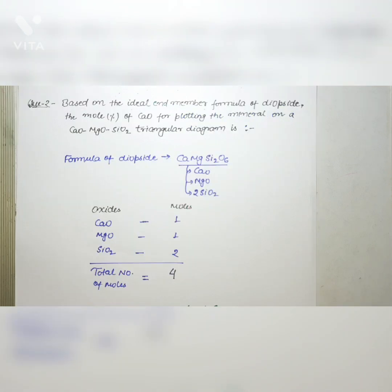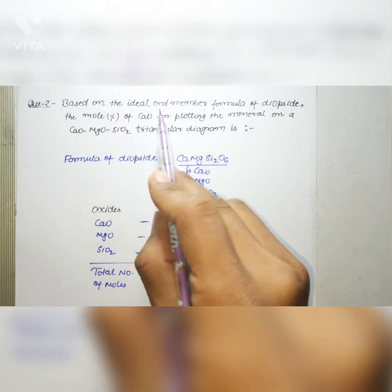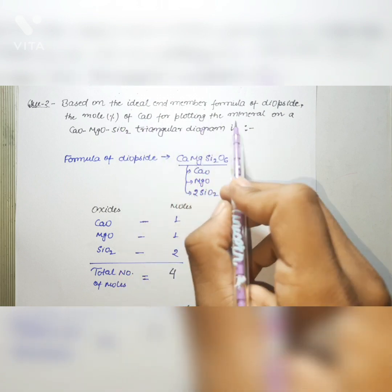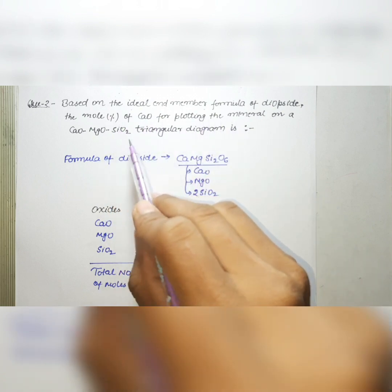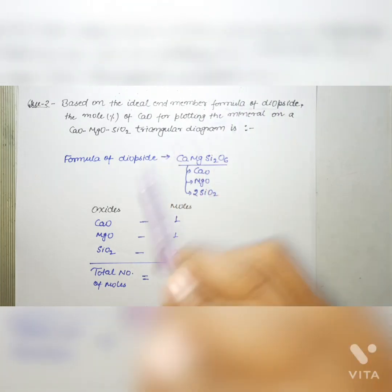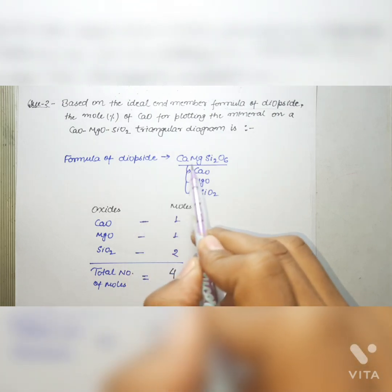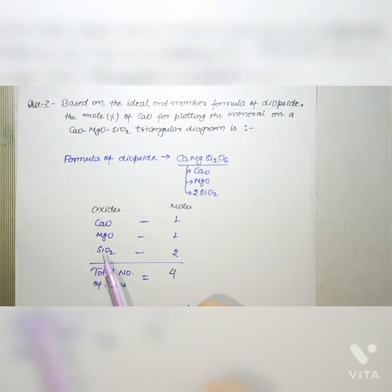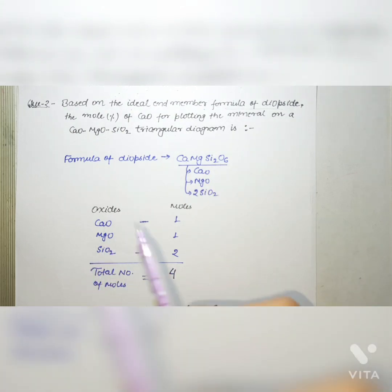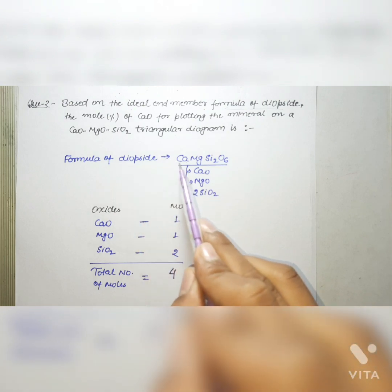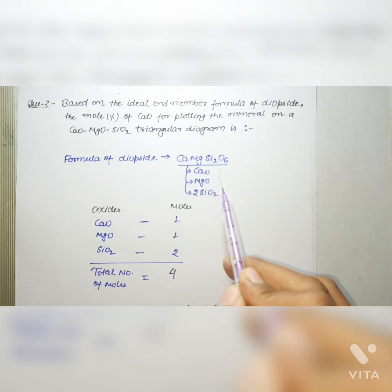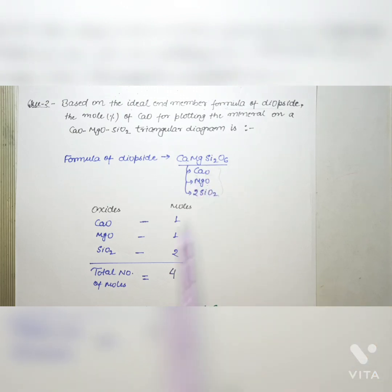Moving to the next question: based on the ideal formula of diopside, what is the mole percentage of CaO for plotting the mineral on a CaO–MgO–SiO₂ triangular diagram? To solve this, you need to know the formula of diopside, which is CaMgSiO₆. Breaking this formula into oxides, you get CaO, MgO, and two moles of SiO₂.